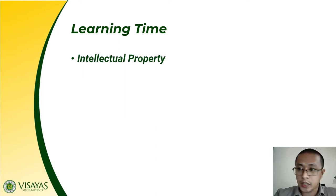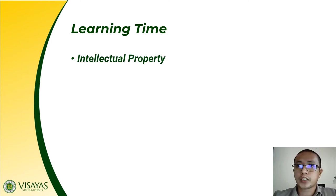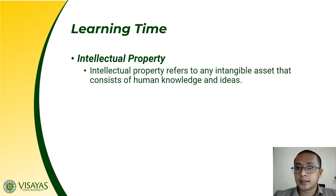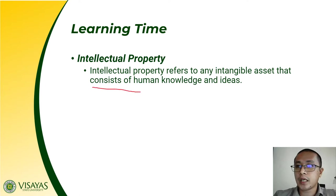We are now going to start our discussion proper on this lesson on intellectual property rights and cybercrime. There are actually three main categories or types of intellectual property which are subjected to legal protections, and this includes copyright, trademarks, and patents. The legal protection is against infringement, which is the invasion of the rights secured by copyrights, trademarks, and patents. When we say intellectual property, these are intangible assets which consist of human knowledge and ideas.